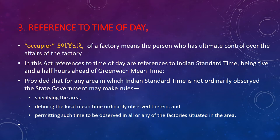The reference to time and date under this Act depends on the Indian Standard Time, which is based on Greenwich Mean Time. The occupier is the person who has ultimate control over the affairs of the factory, and the manual outlines clothing requirements in the factory.